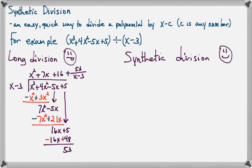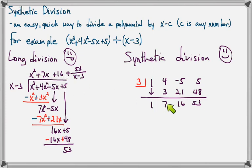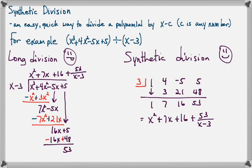I'll explain it in more detail on the next slide, but basically what we do is we copy down all the coefficients, and we put the solution to x minus 3 equals 0 in the box. So if x minus 3 is 0, x is 3 — that goes in the box. Now we pull down the first number, then multiply 3 times 1 and put that answer here, then add: 4 plus 3 is 7. Then multiply 3 times 7 is 21, put that here, and add. Then multiply, then add. Notice that here are all the coefficients of our answer. If you start with x to the third in your divisor, the first term in your quotient is going to be x squared — it's always one less than what you started with.